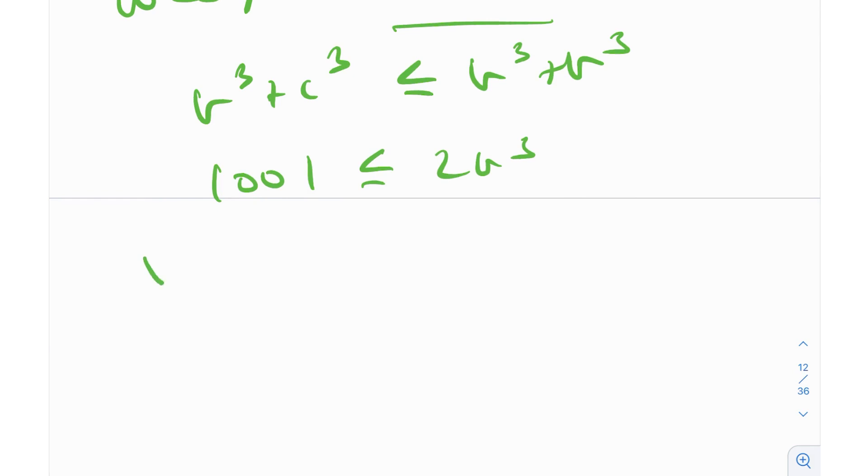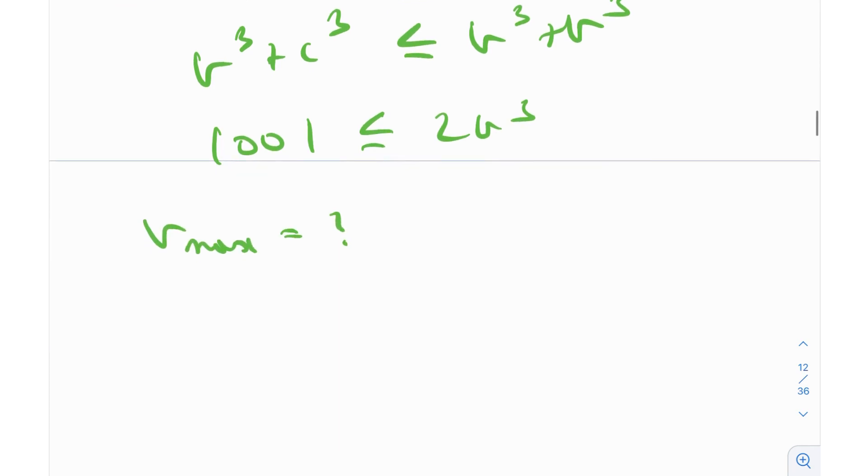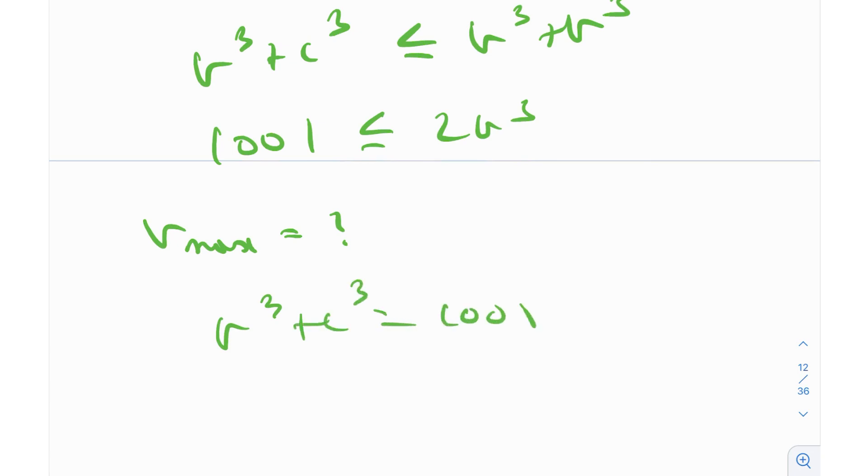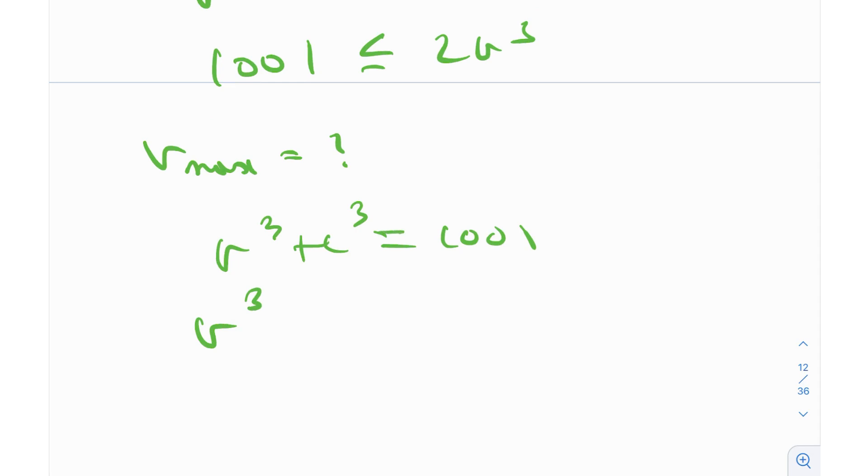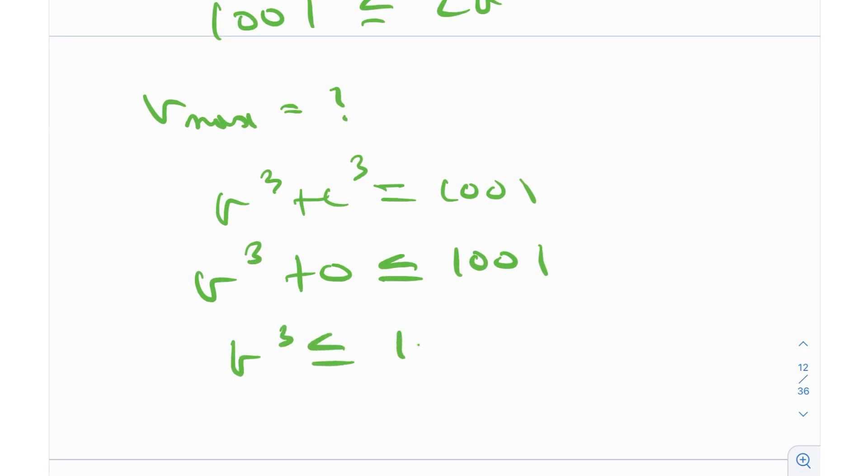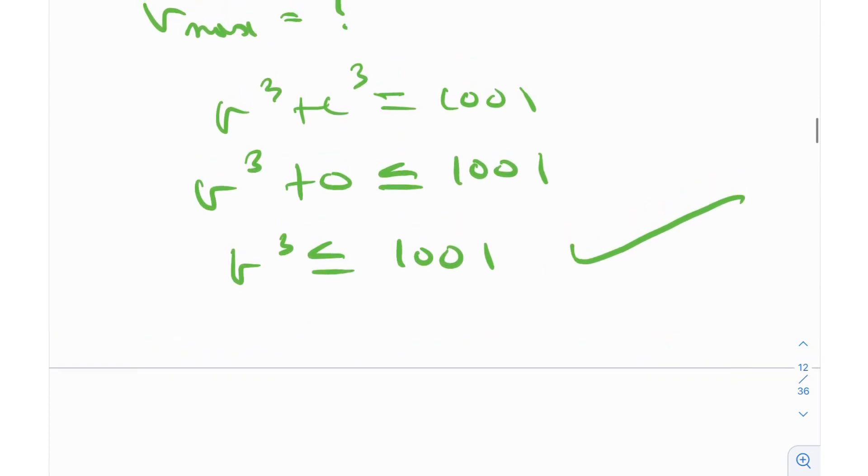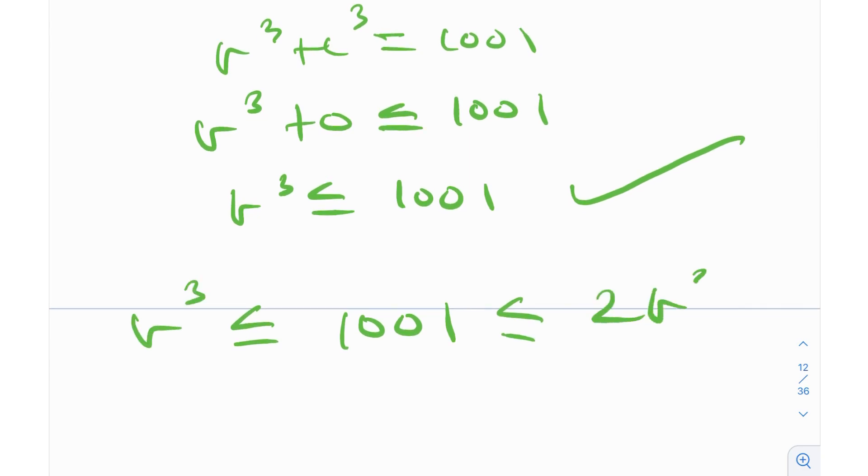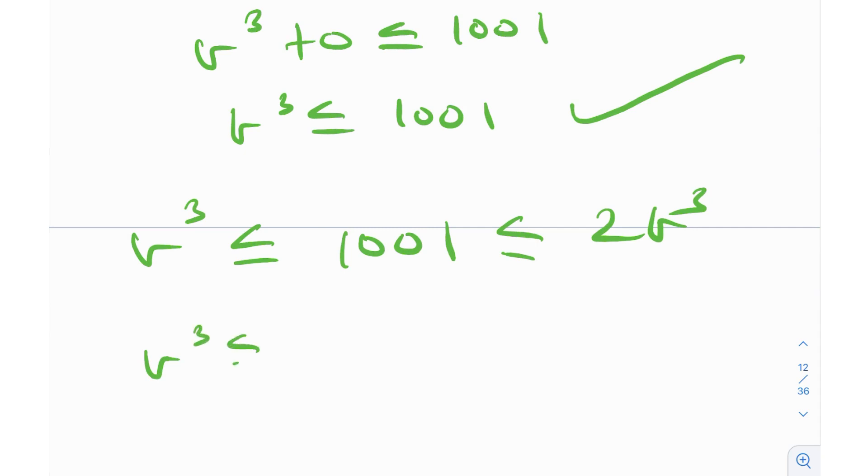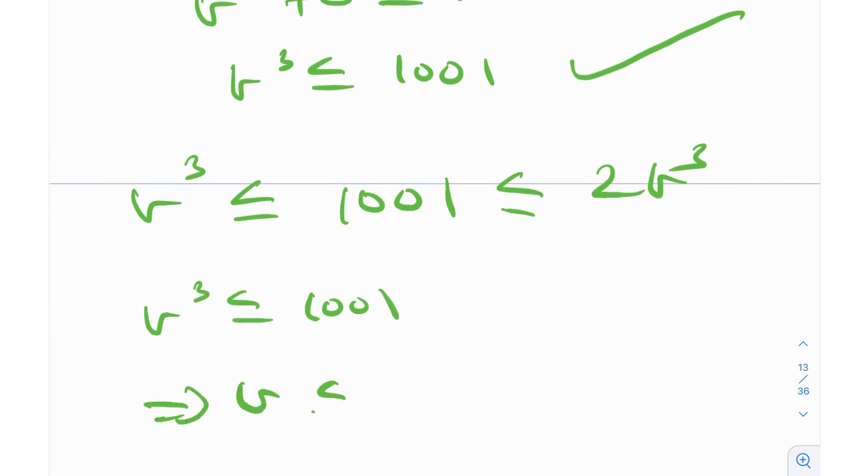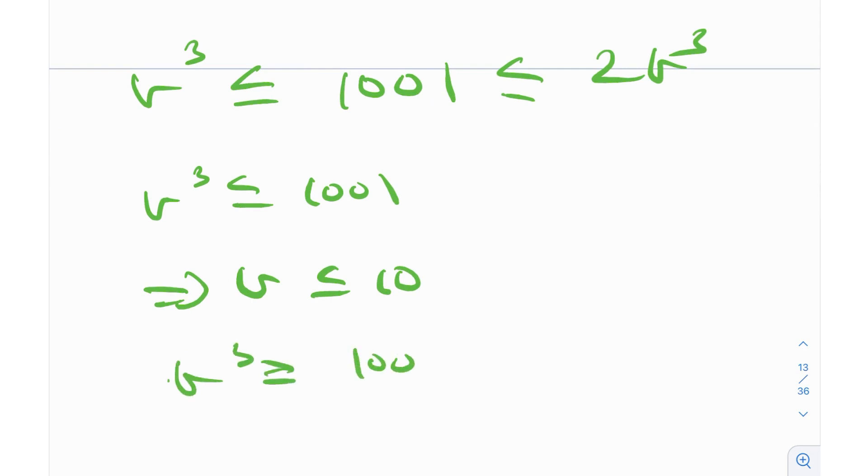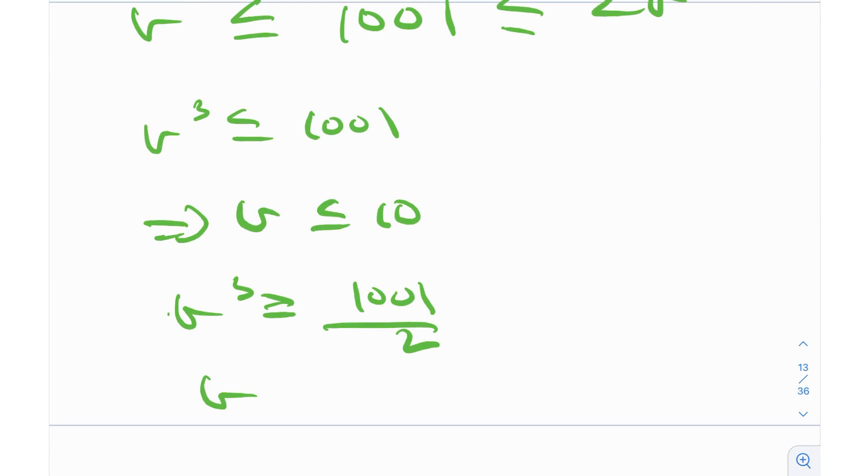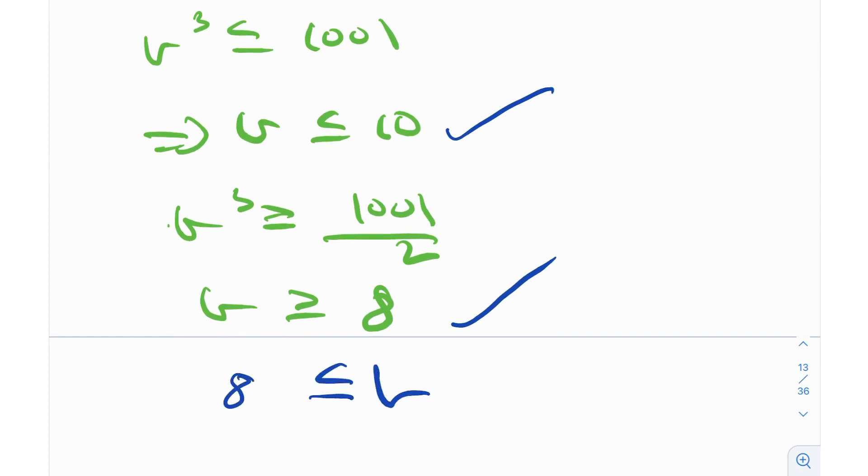Again, I ask myself the question, what is B max? And how do you figure that out? Again, just a similar strategy, B³ + C³ = 1001. B maximum will happen when C = 0. So B³ + 0 ≤ 1001. So B³ needs to be ≤ 1001. Using this and this, we get a bound for 1001 in terms of B. B³ is less than 1001, which implies that B ≤ 10. Similarly, B³ ≥ 1001/2. In other words, B ≥ 8. So now, using this and this, B is also bounded between 8 and 10.